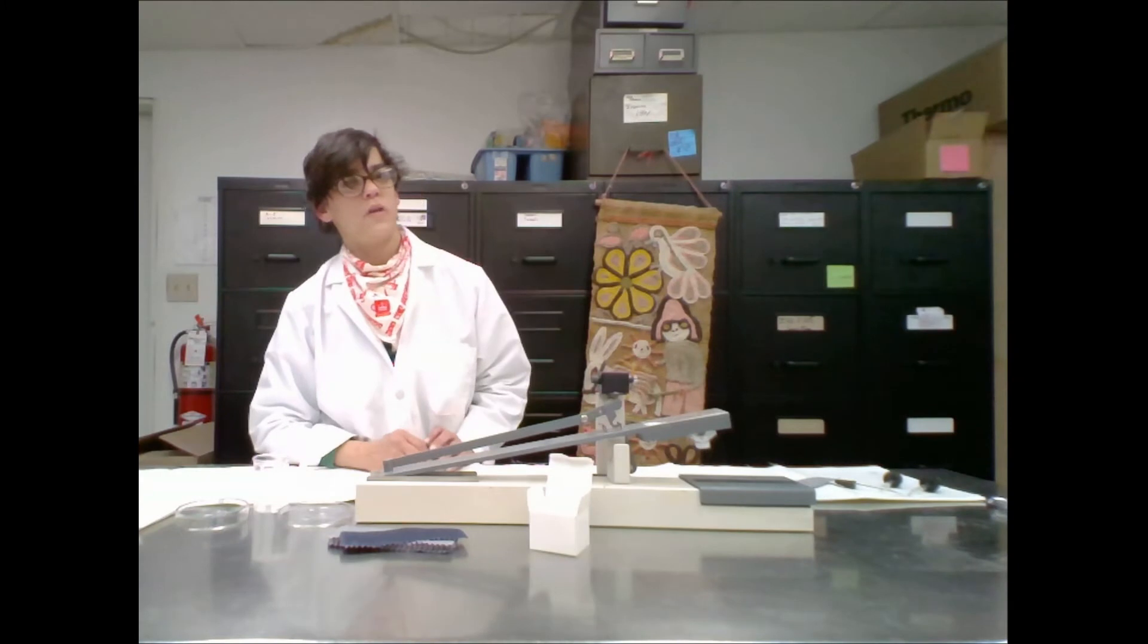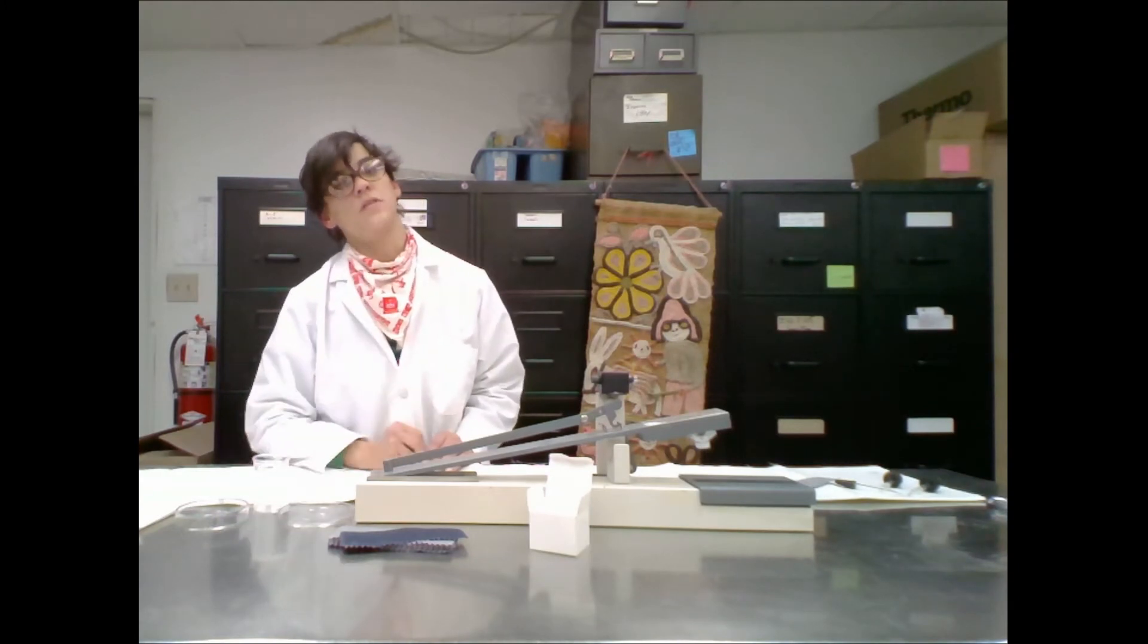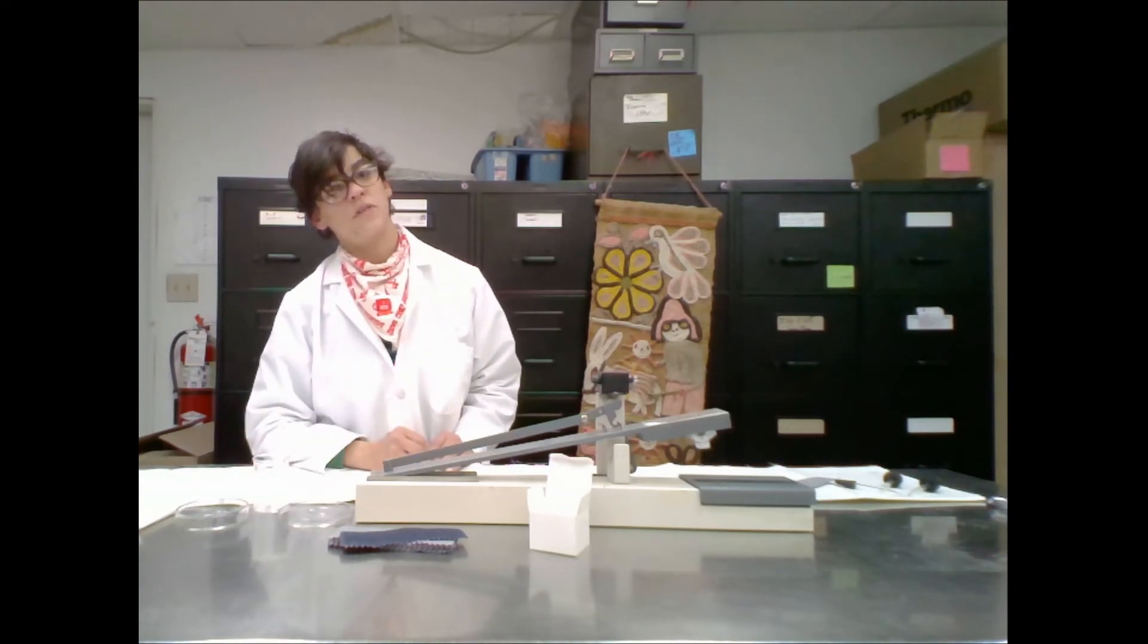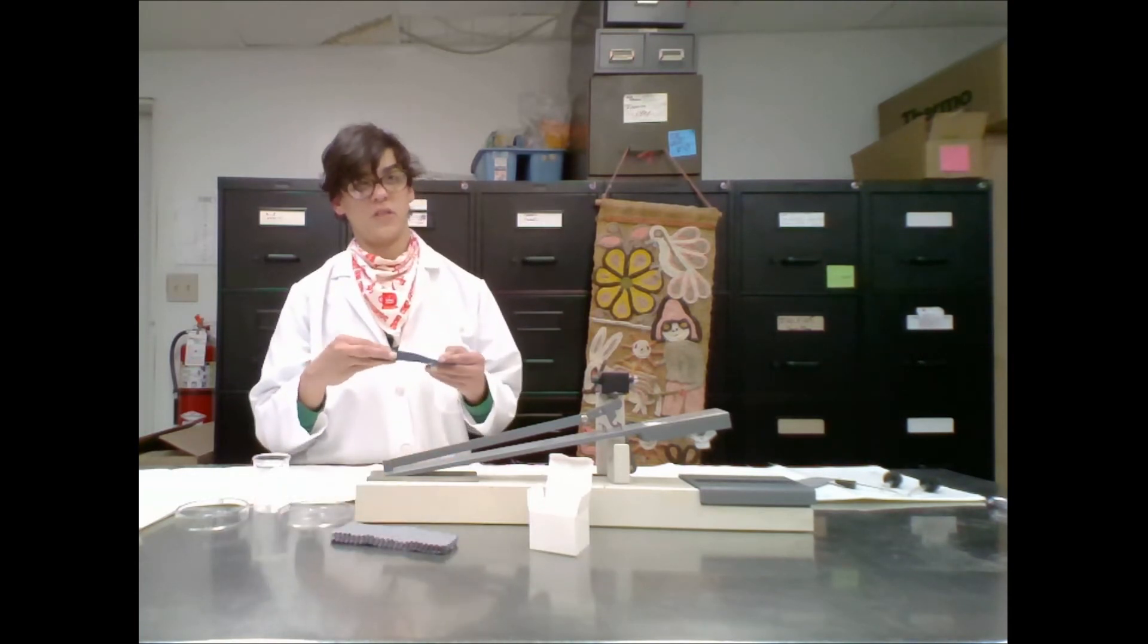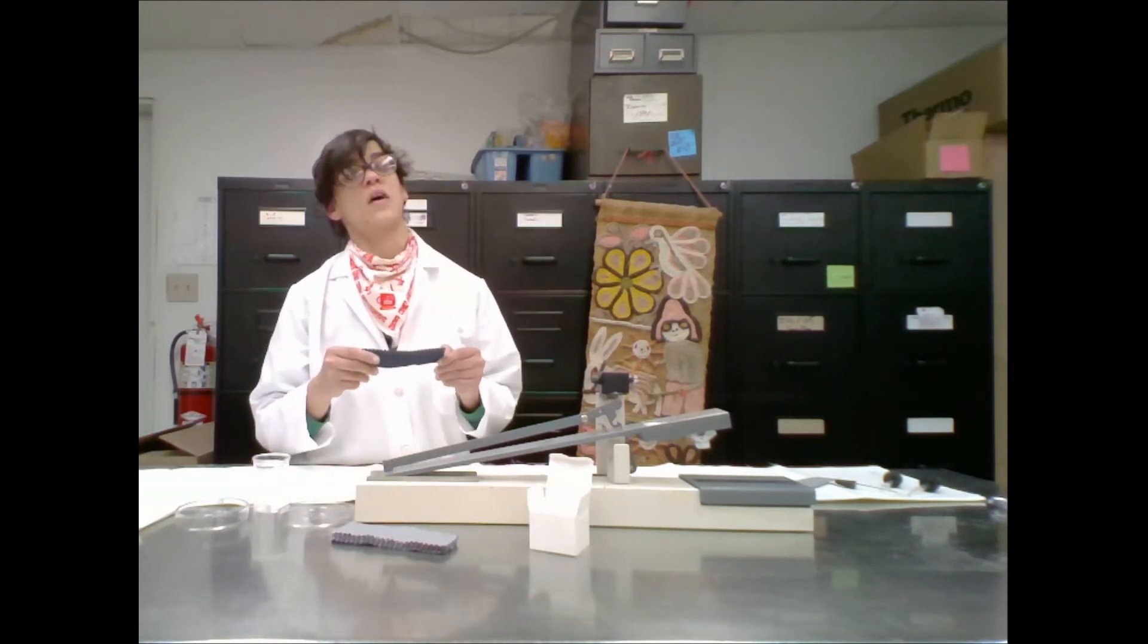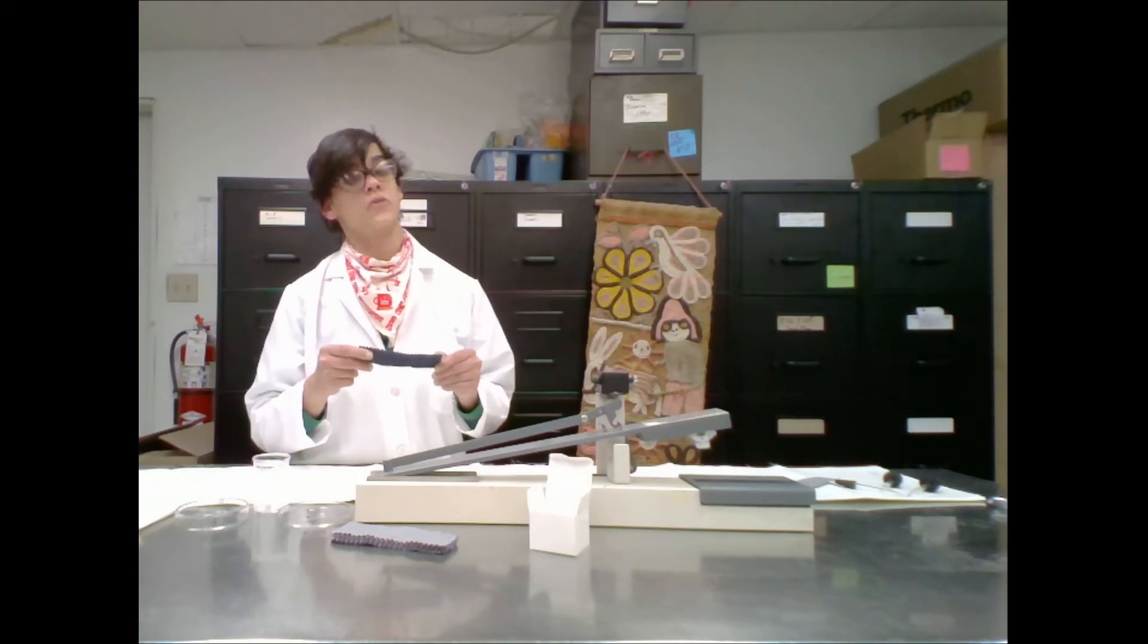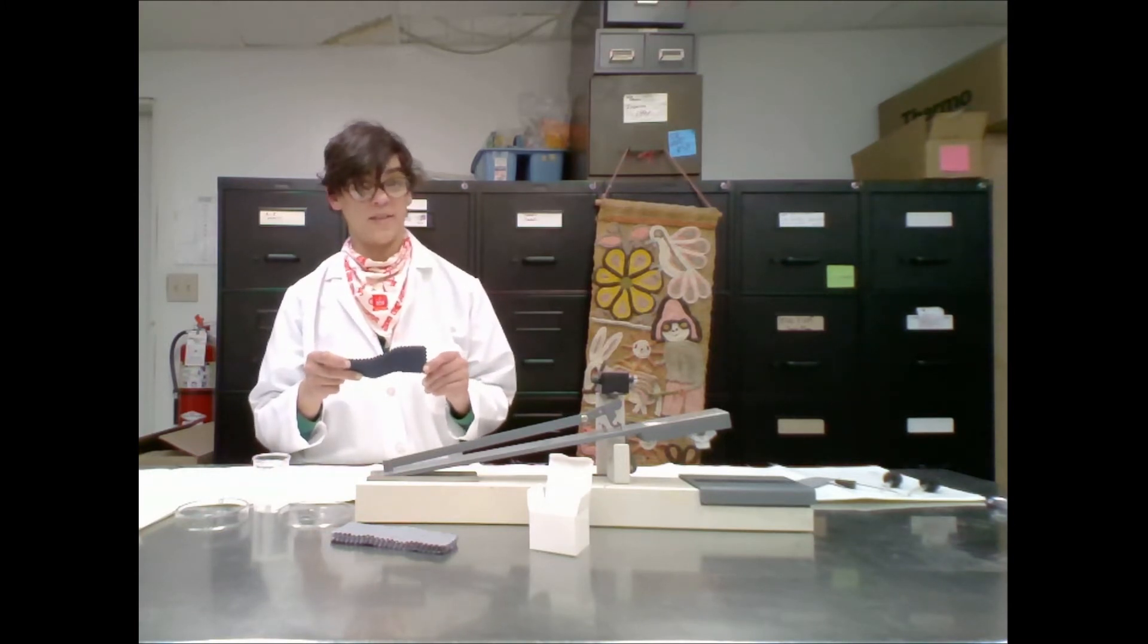To do the Croc Meter test, cut two specimens of the backing fabric to be tested. Cut them two inches by five inches on the bias so that both warp and weft yarns are tested for color fastness evenly.